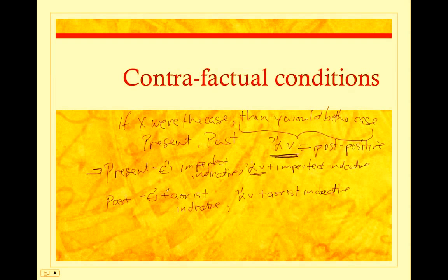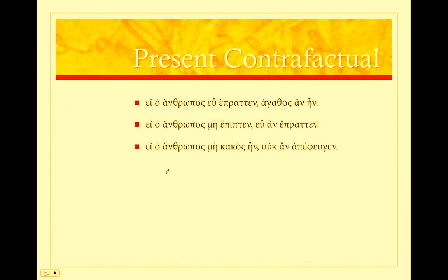So let's take a look at some of these and see how to translate them. In the present contrafactuals, first, notice all of these verbs are going to be imperfect. In our apodoses, they're all the particle ἄν, and they're all in the second position.